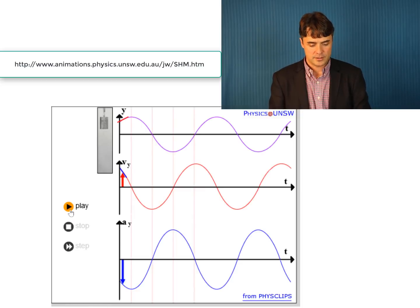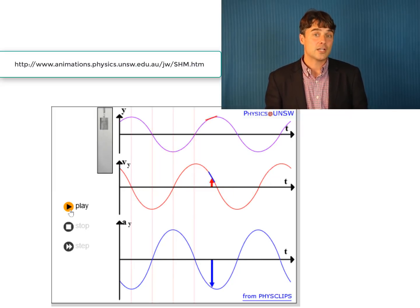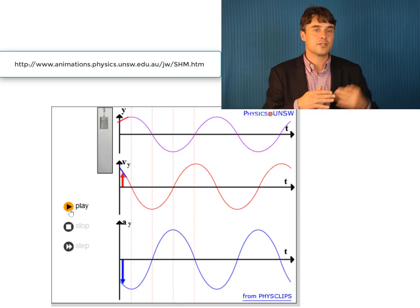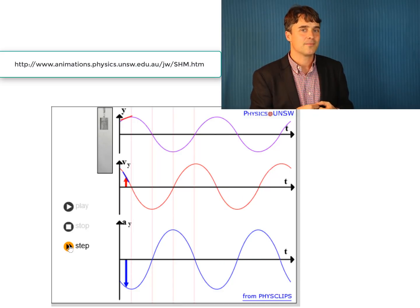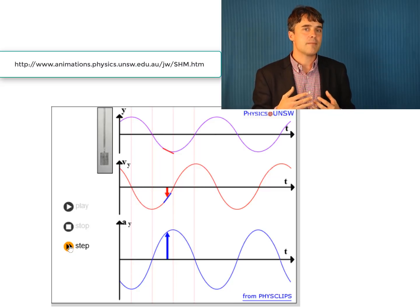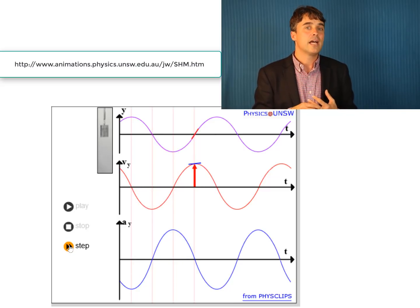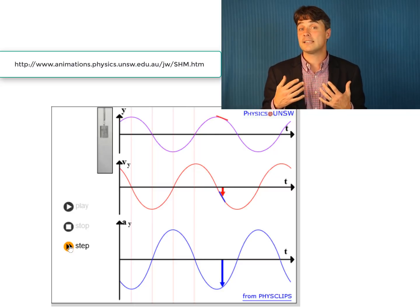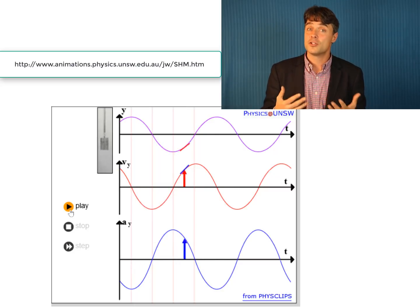And all of this is shown nicely on this animation. The top graph shows the actual position of the mass on the spring, which is actually y in this case. The graph below shows the vertical velocity of the mass shown by this red arrow. And the bottom graph shows the acceleration of this mass shown by the blue arrow.